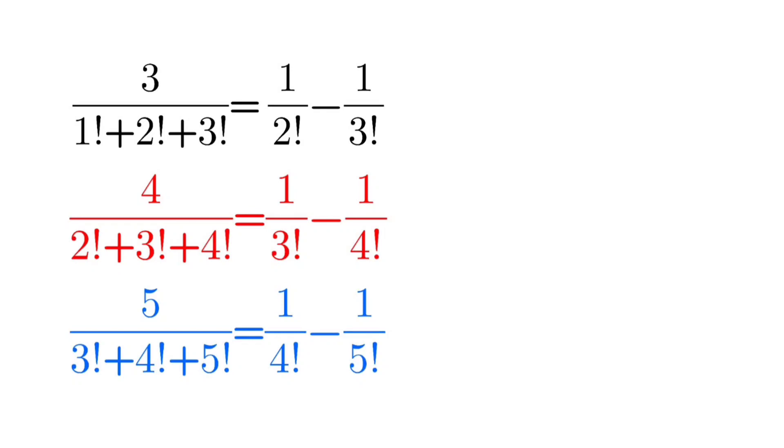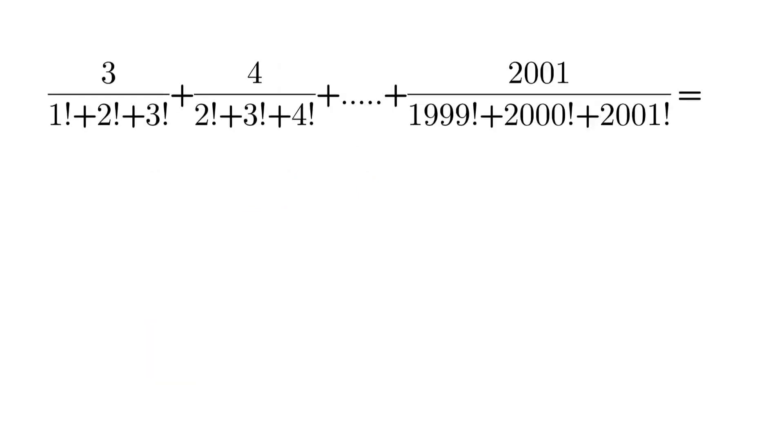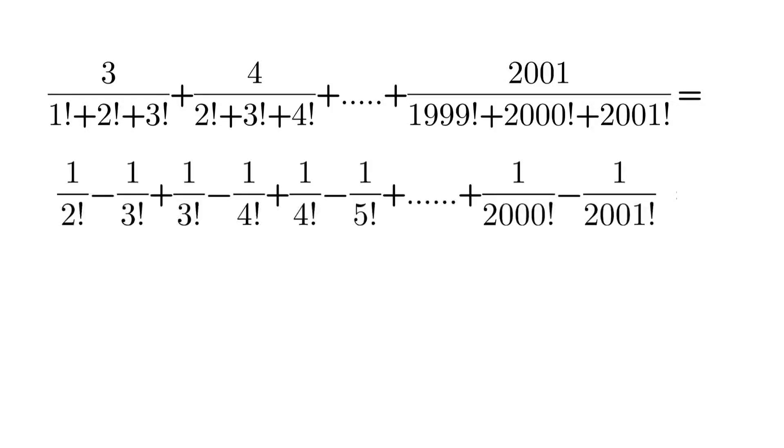Let's simplify our general case. Every term is subtraction of two fractions which contains factorial, and this will cancel every single term with each other, leaving first and last term which is 1 by 2 factorial minus 1 by 2001 factorial, and this is our answer.